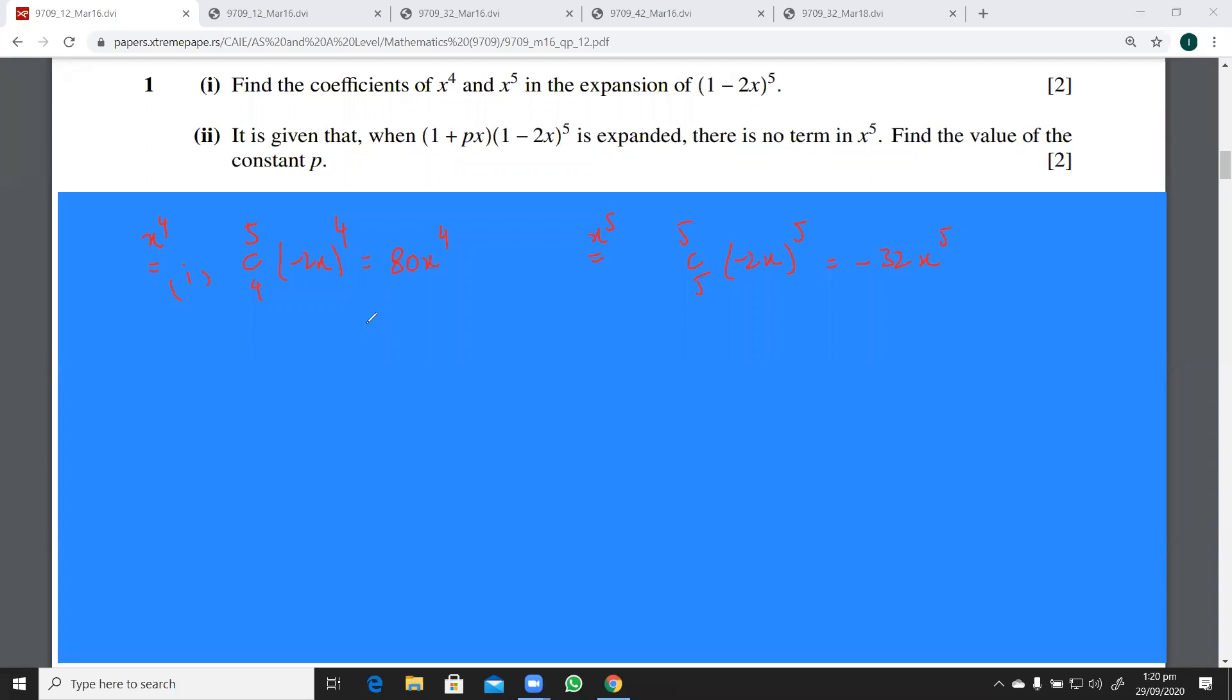You would say that the answers are 80 and -32, because you have to give the coefficients. We are not to give the terms in x⁴. If the question was 'give the term in x to the power four,' then 80x⁴ could be your answer. But here we have to only give the coefficient. Now I'm moving to the second part of this question.